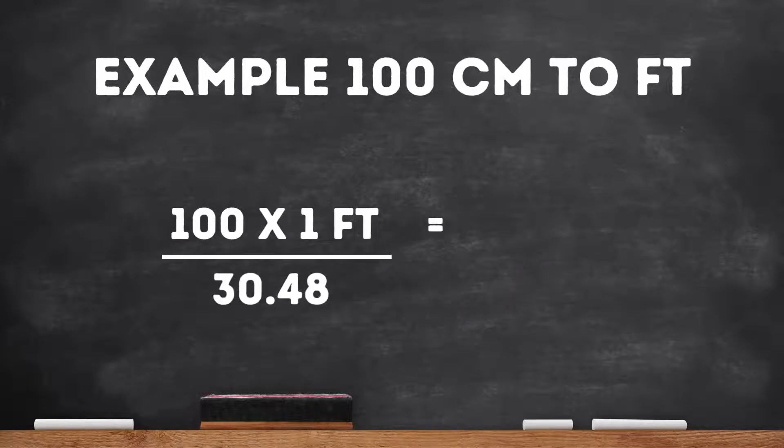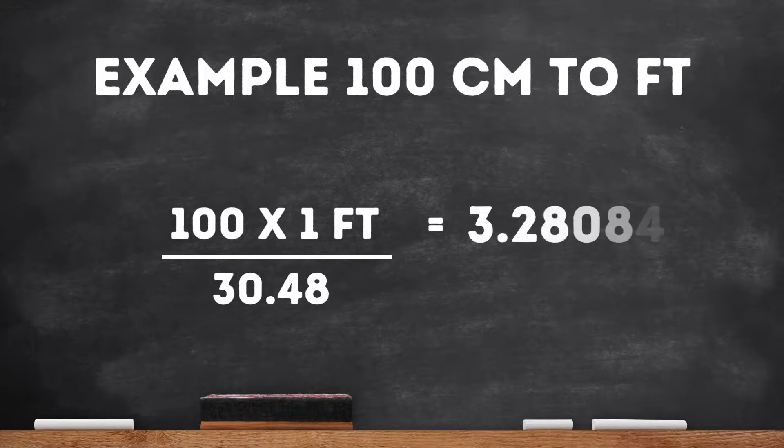After the units cancel each other we are left with the following equation that we will use to get feet. All we have to do from here is divide 100 by 30.48. After you divide by hand or with a calculator we find that 100 centimeters is equal to 3.28084 feet.